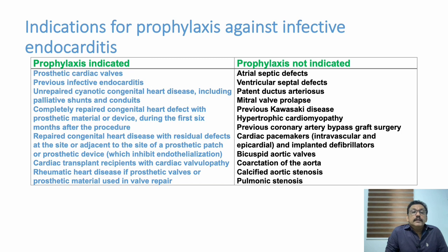Prophylaxis is also indicated for: completely repaired congenital heart defect with prosthetic metallic valve or devices within the first six months after procedure; repaired congenital heart disease with residual defects at or adjacent to the site of prosthetic patch or device; cardiac transplant patients; cardiac valvulopathy; and rheumatic heart disease with prosthetic or damaged valves.